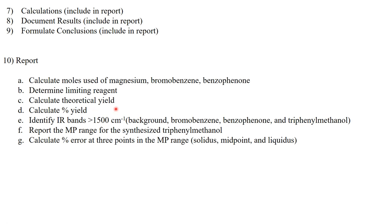And then I need you to identify the IR bands in the four infrared spectra and concentrate on those that are greater than 1500 wavenumbers. I want you to identify those bands in the background, the bromobenzene spectrum, benzophenone, and the triphenyl methanol. Note that some of these will be groups because they're very complex. Just identify the groups.